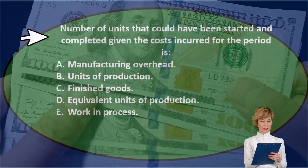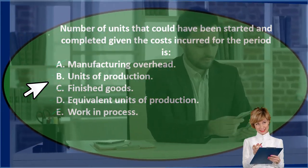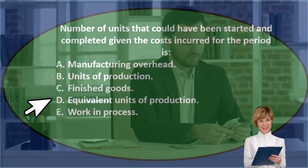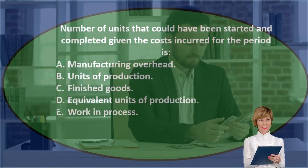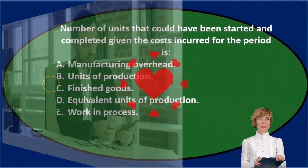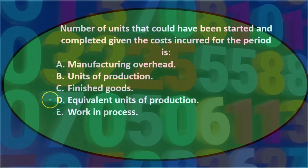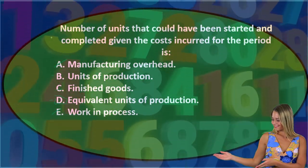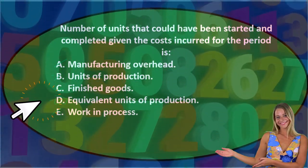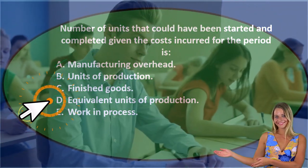Between B, units of production, and D, equivalent units of production — we're looking for the number of units that could have been started and completed given costs incurred. Units of production is more of a set number, whereas equivalent units is more of an estimate — the number of units that could have been started and completed. That matches the equivalent units concept. Final answer: D, equivalent units of production.